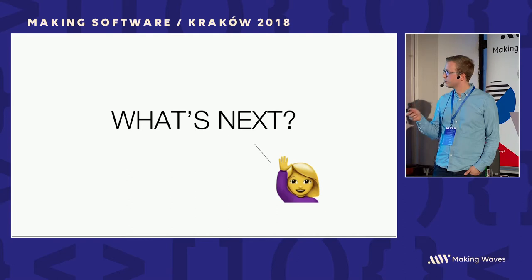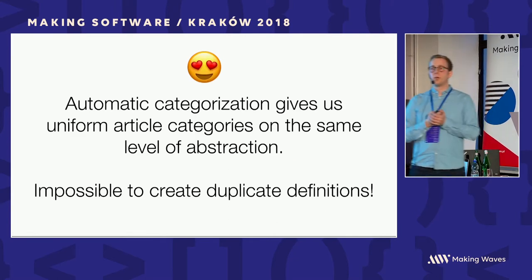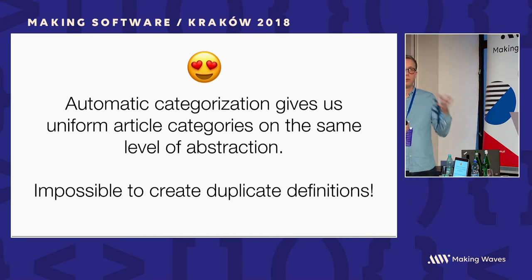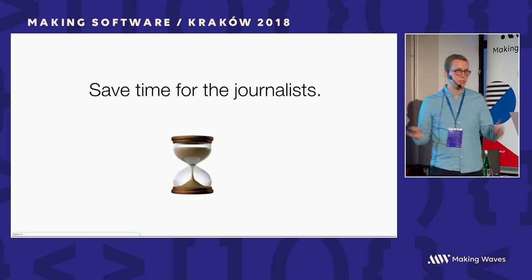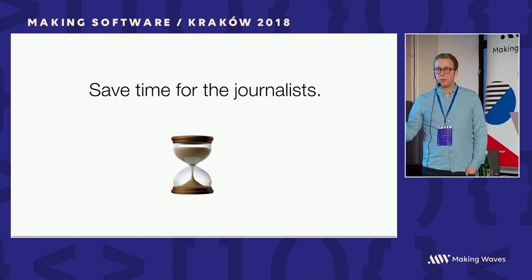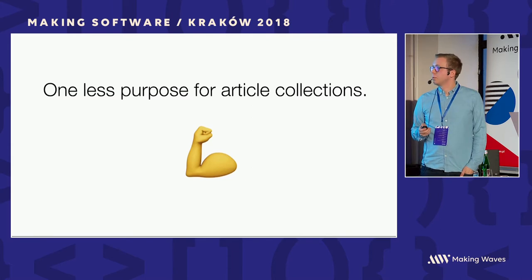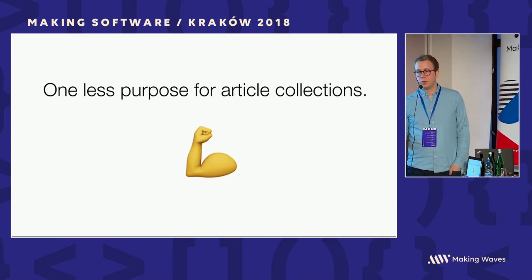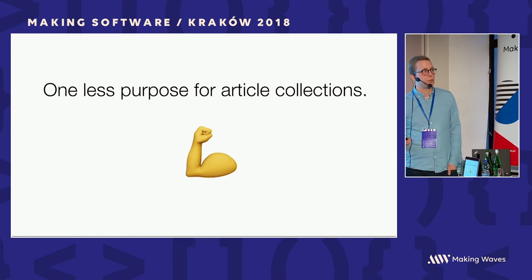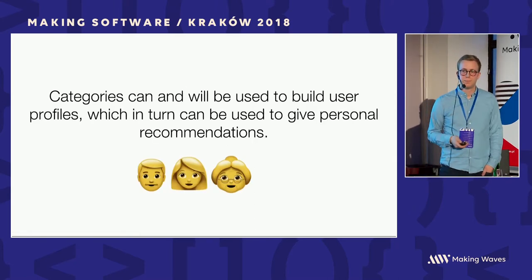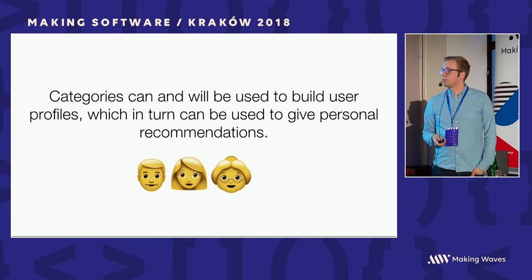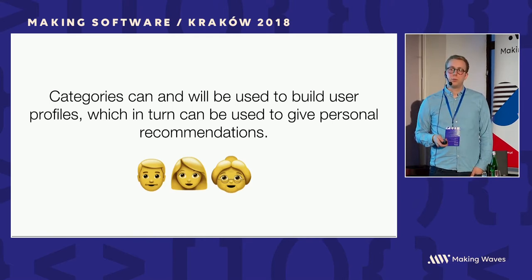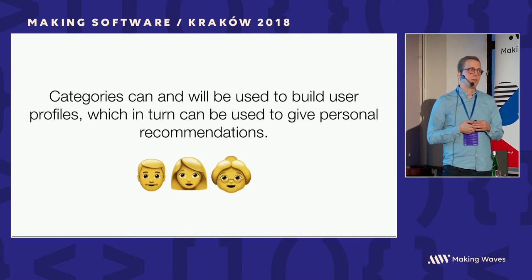What's next for us? This automatic categorization gives us uniform article categories on the same level of abstraction with no duplicate definitions. We save time for our journalists. We've removed one purpose from those article collections so they can be used more cleanly. And categories can and will be used to build user profiles which in turn can be used to give personal recommendations in the future.